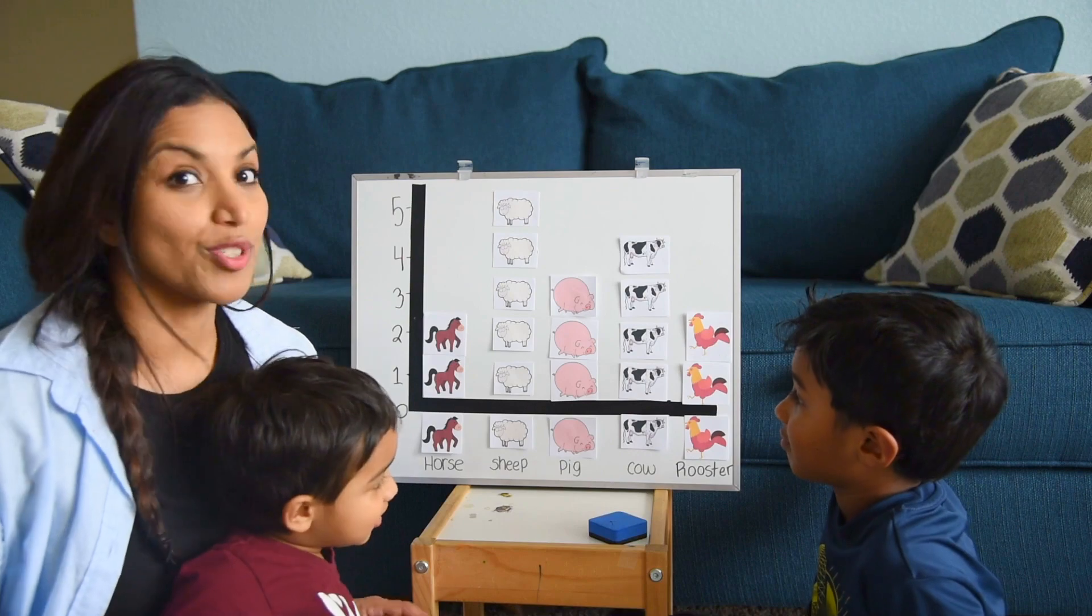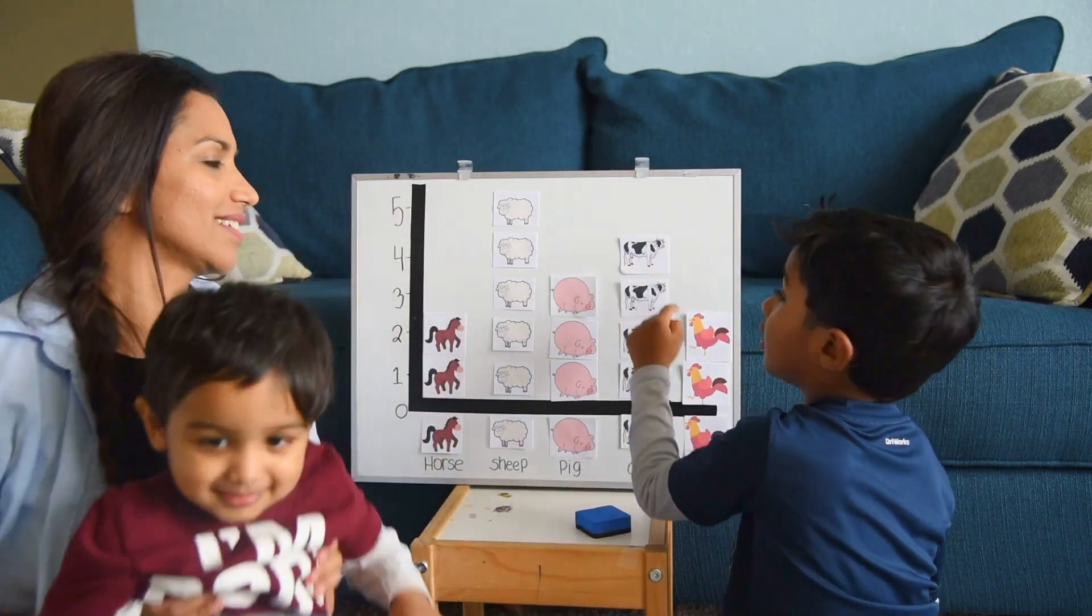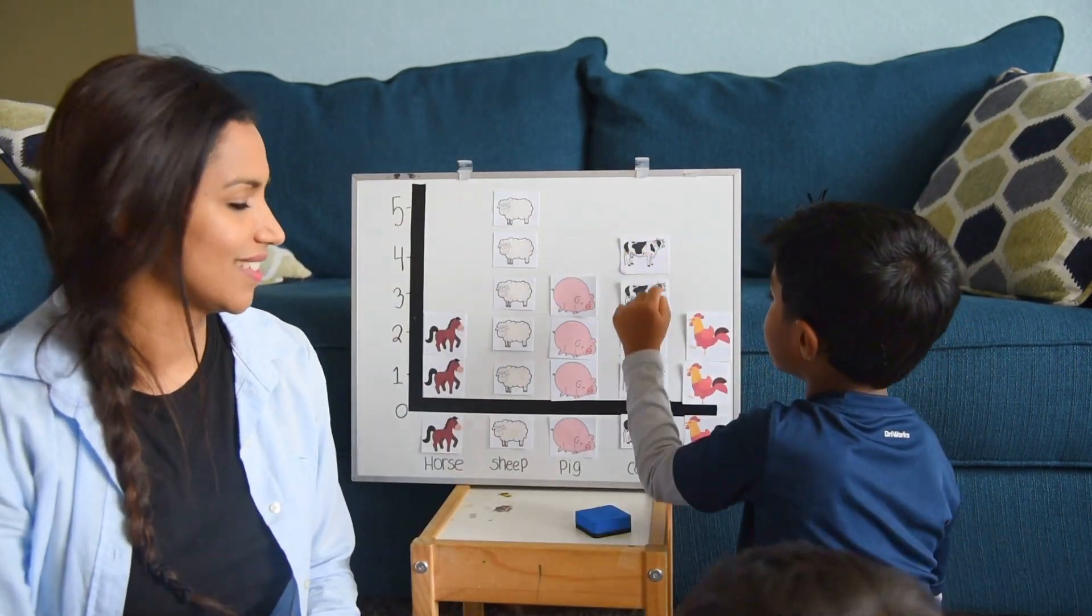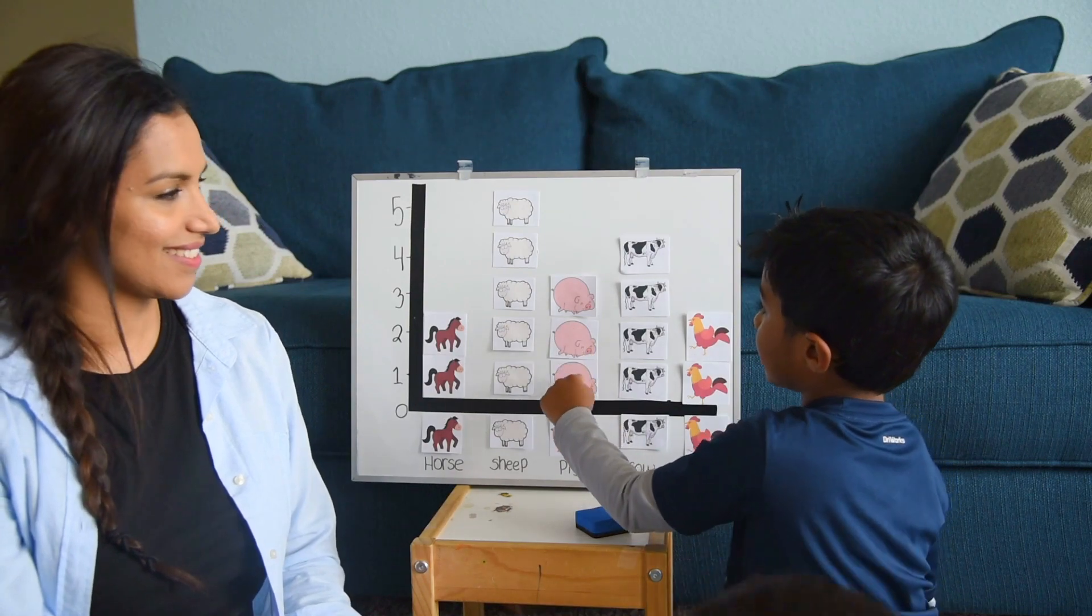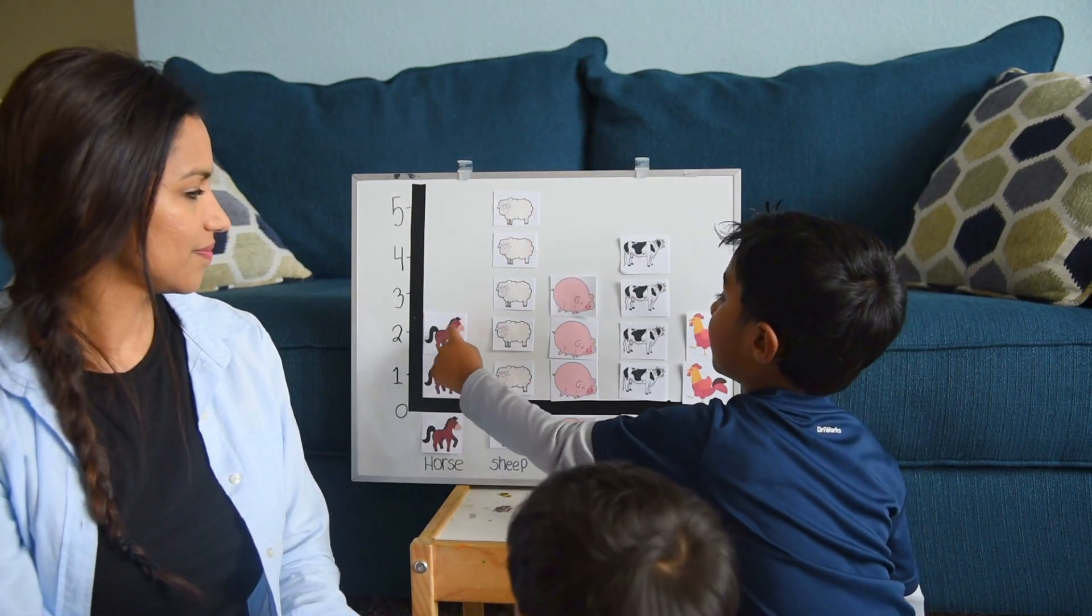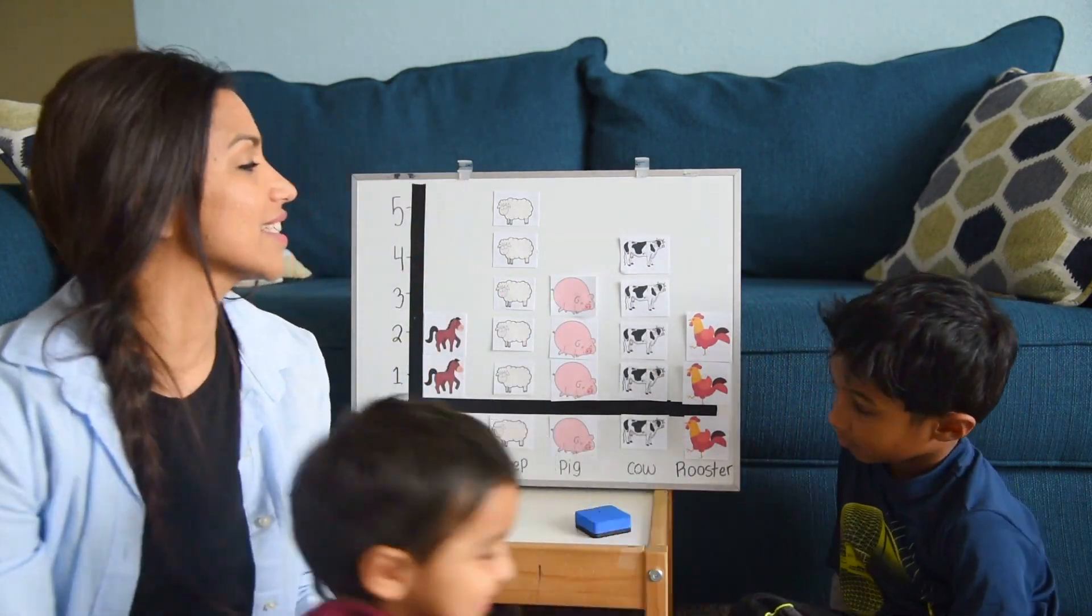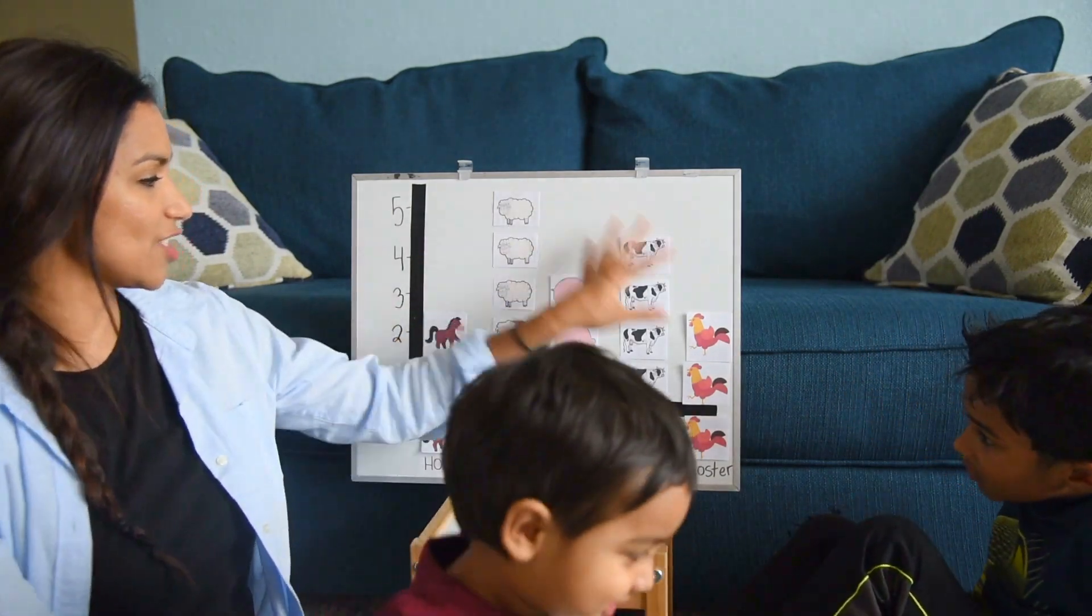Now comes a tricky one. How many animals are there in all? One, two, three, four, five, six, seven, eight, nine, ten, eleven, twelve, thirteen, fourteen. You're going too fast. Start again. One, two, three, four, five, six, seven, eight, nine, ten, eleven, twelve, thirteen, fourteen, fifteen, sixteen. There are a total of sixteen animals in this farm.